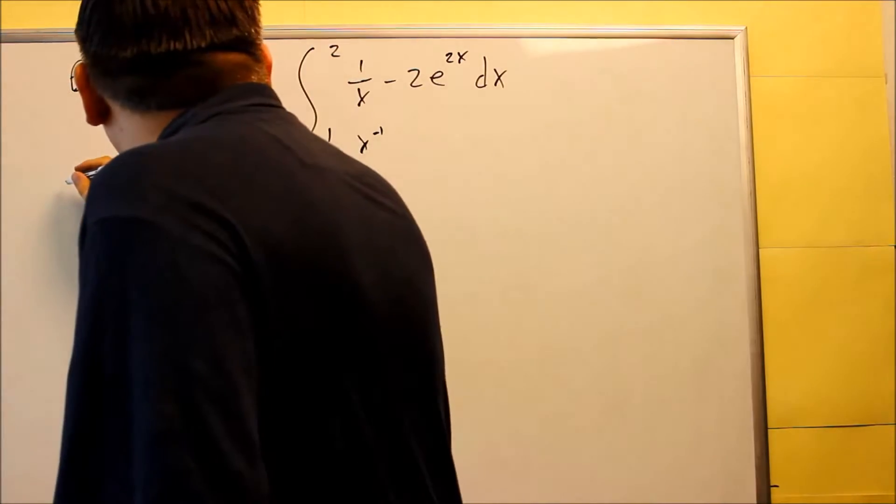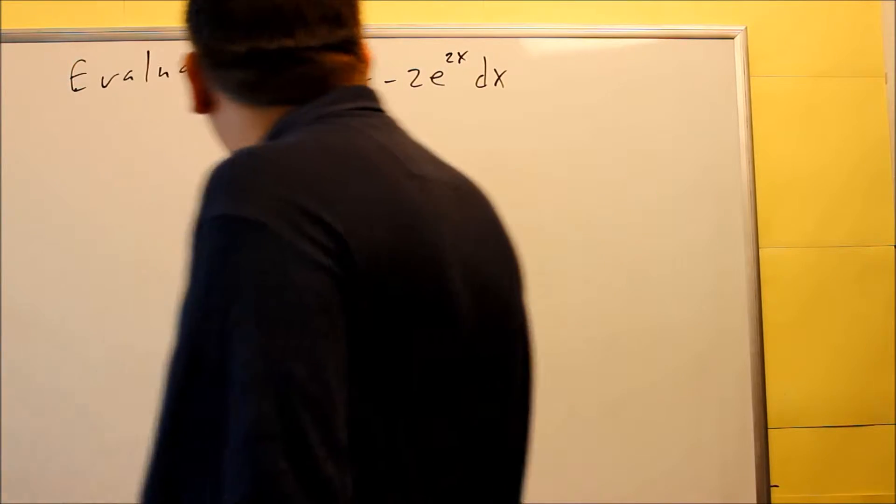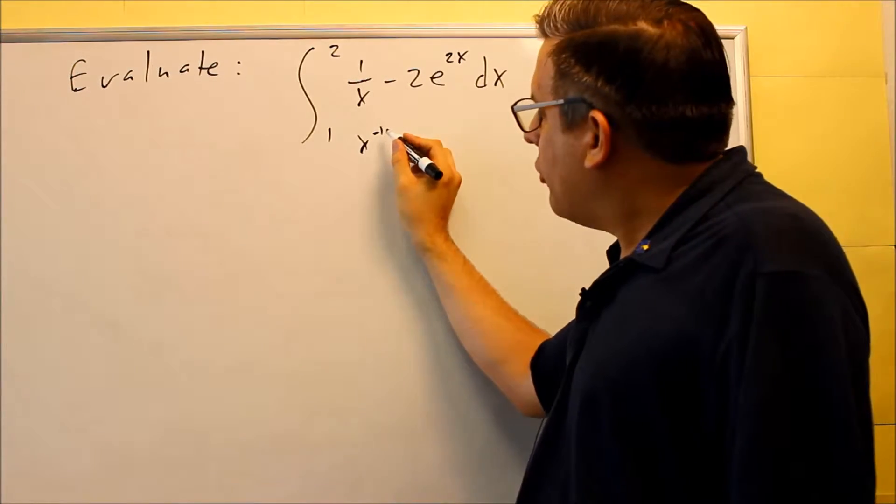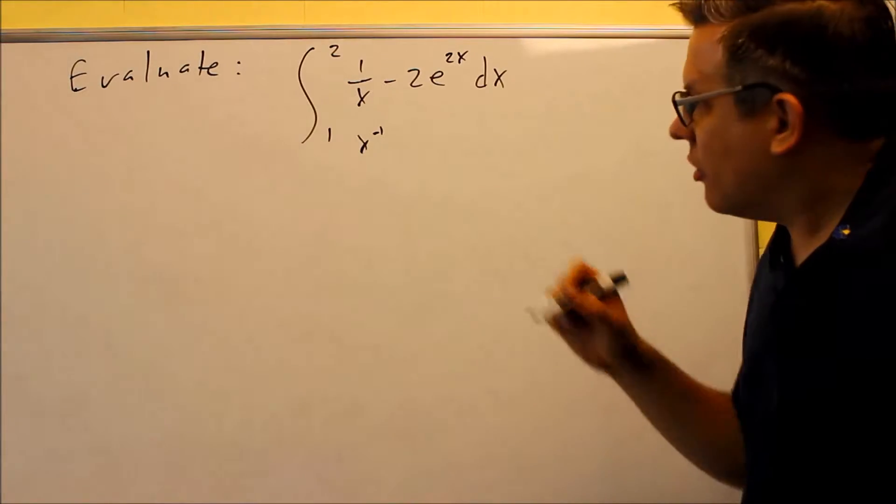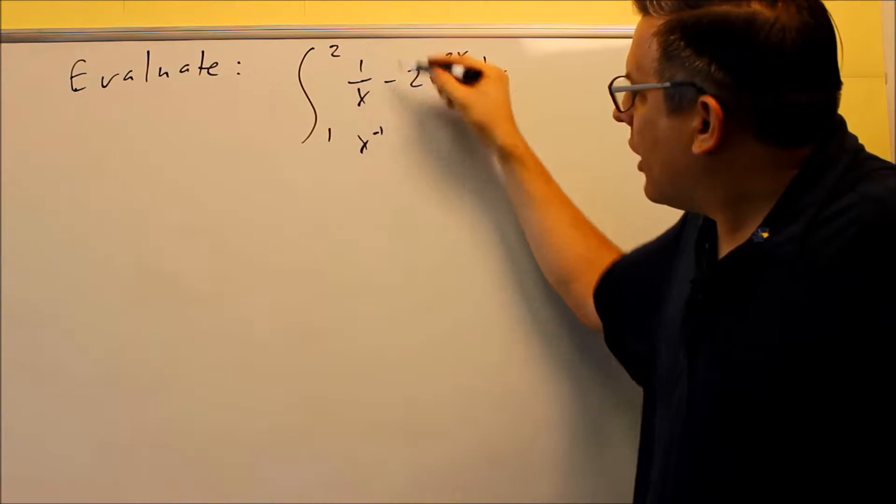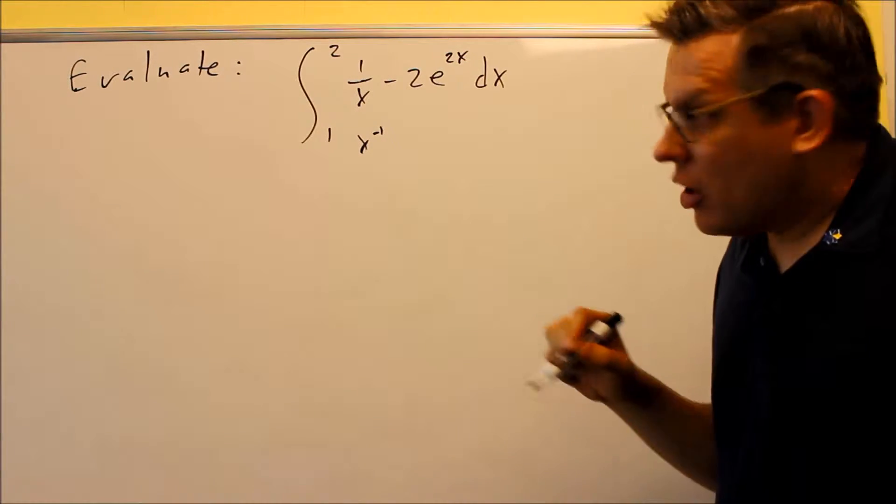So when I do the anti-derivative for this, raise the power by 1 divided by the new power. Now when I integrate that, I can't use the inverse power rule because you're dividing by zero. So this is a problem that's going to turn into a natural log.